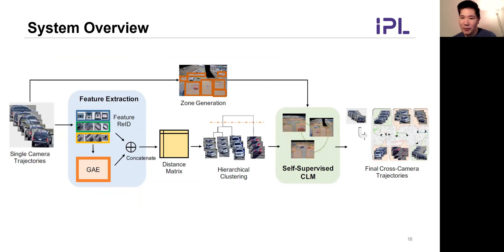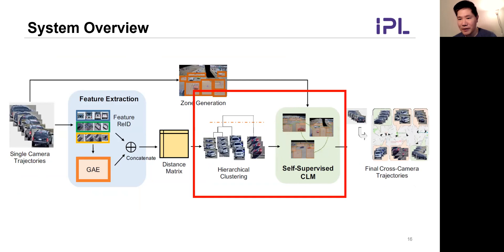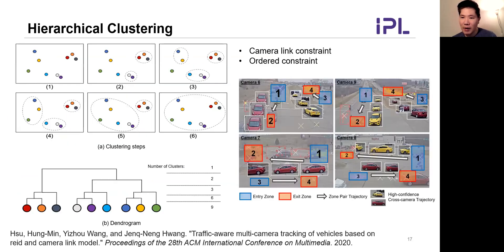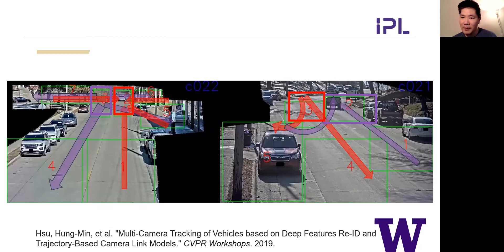Once we have the final embedding, we compute the distance matrix to select high-confidence trajectories to construct the camera link model automatically. We use hierarchical clustering to generate high-confidence trajectories to establish the camera link model. Once the camera link model is constructed, we apply hierarchical clustering again to generate the final global trajectories across cameras. Trajectories that do not satisfy the camera link and temporal constraints are excluded from clustering. Therefore, the camera link can be established automatically by this self-supervised approach.